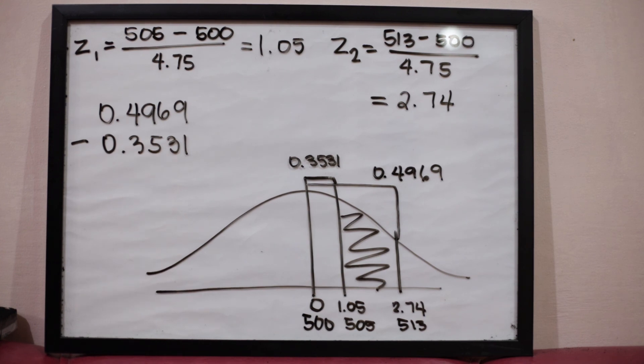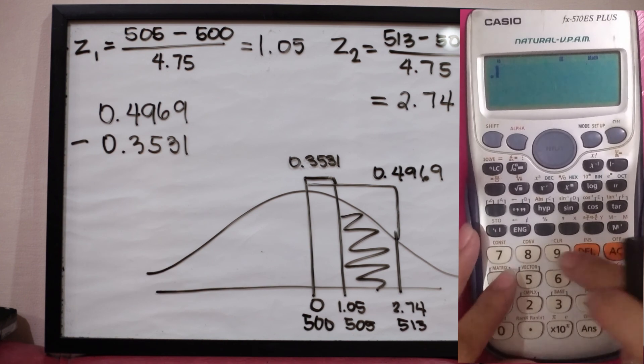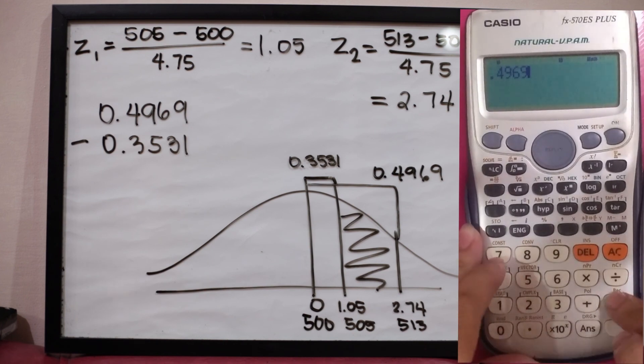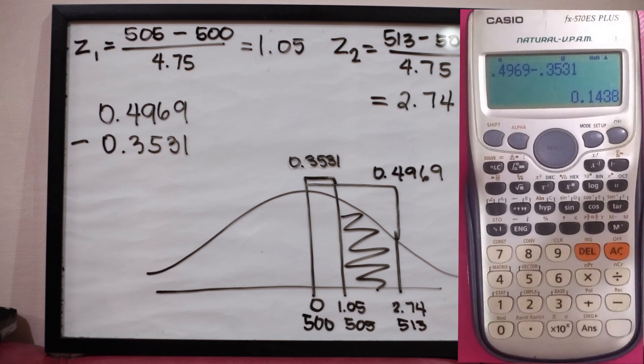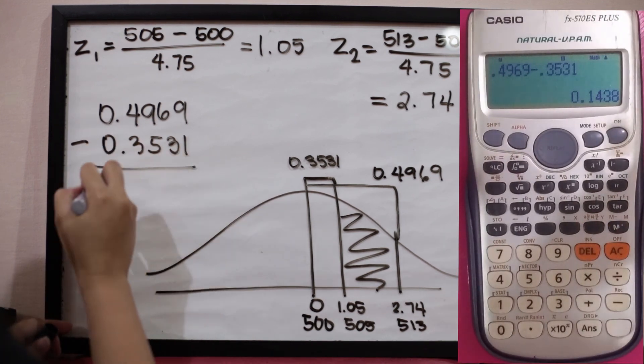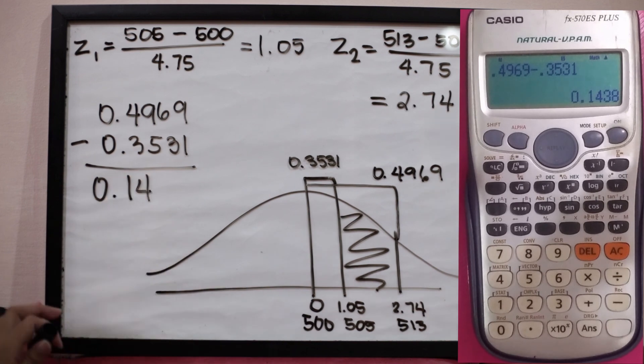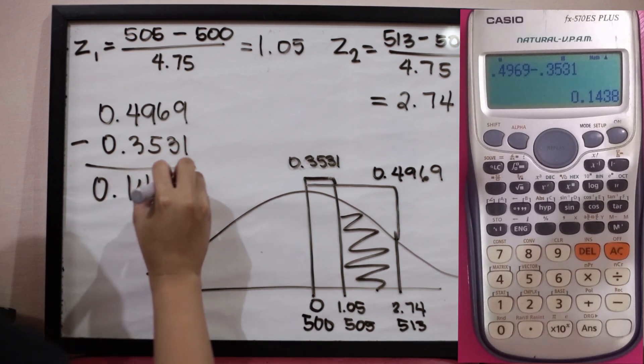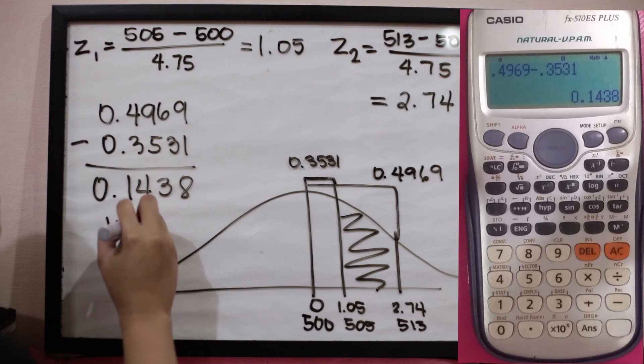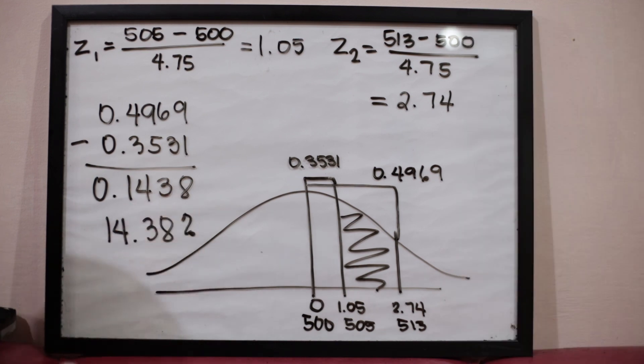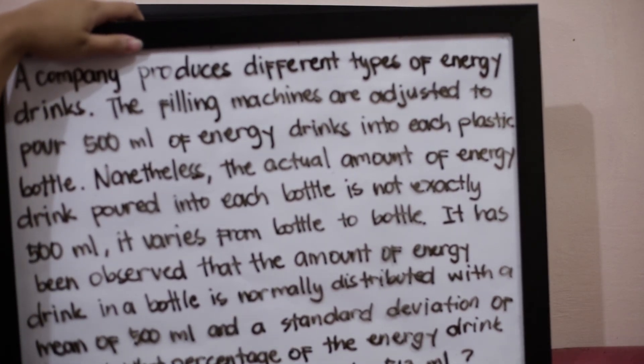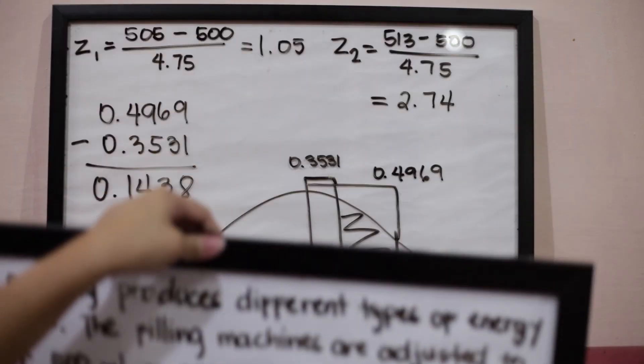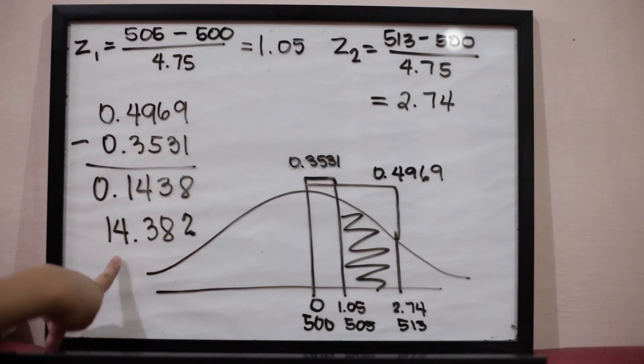You really have to analyze. This is 0.4969 minus 0.3531. The answer is 0.1438, or in percentage, this is 14.38%. Meaning to say, in conclusion, the percentage of the energy drink bottles that contains 505 to 513 ml is 14.38%.